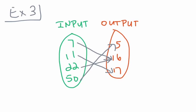For our next example, we have input values of 7, 11, 22, and 50, and output values of 5, 16, and 17. We see that 7 leads to 16, 11 leads to 17, 22 also leads to 16, and 50 leads to 5. Even though 7 and 22 both map to 16 — two different inputs leading to one output — that is okay. It is still a function, because we don't have any inputs that map to two different outputs. Each input has only one output.